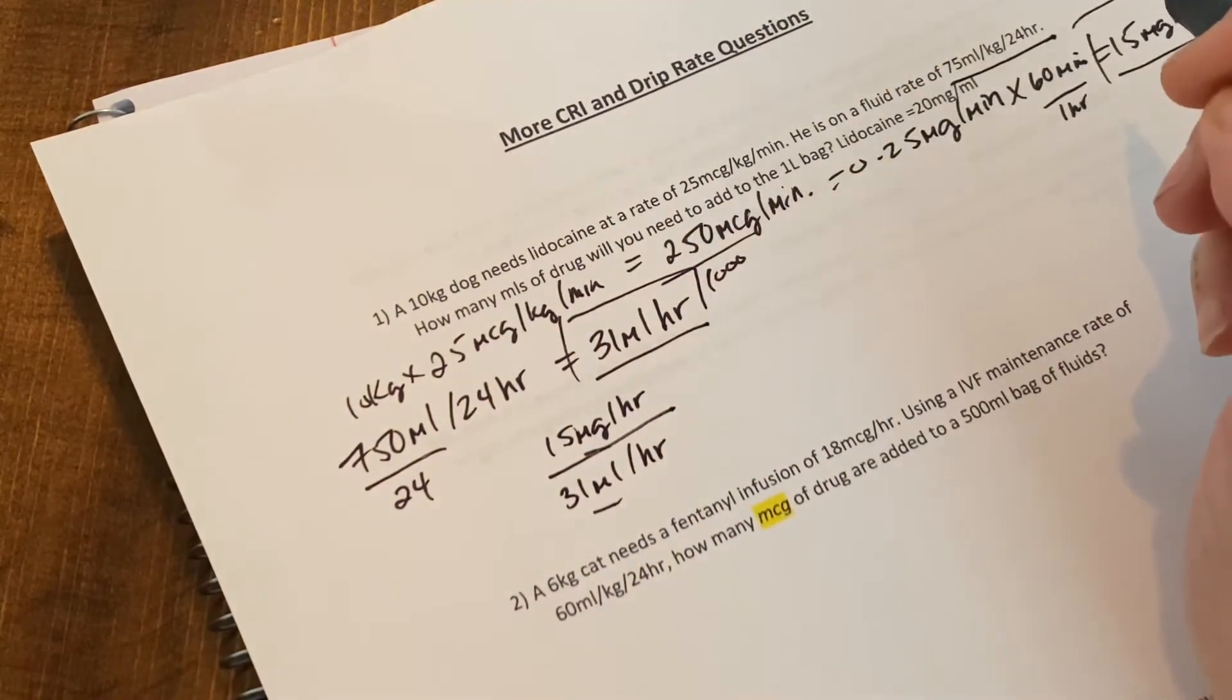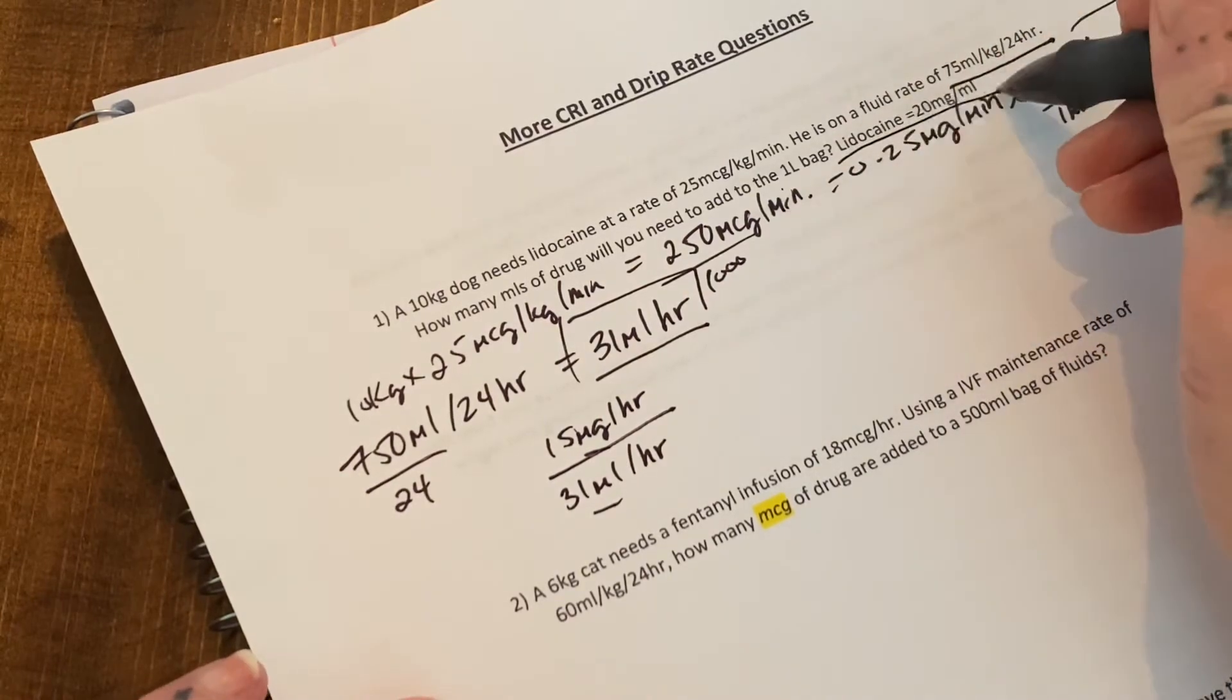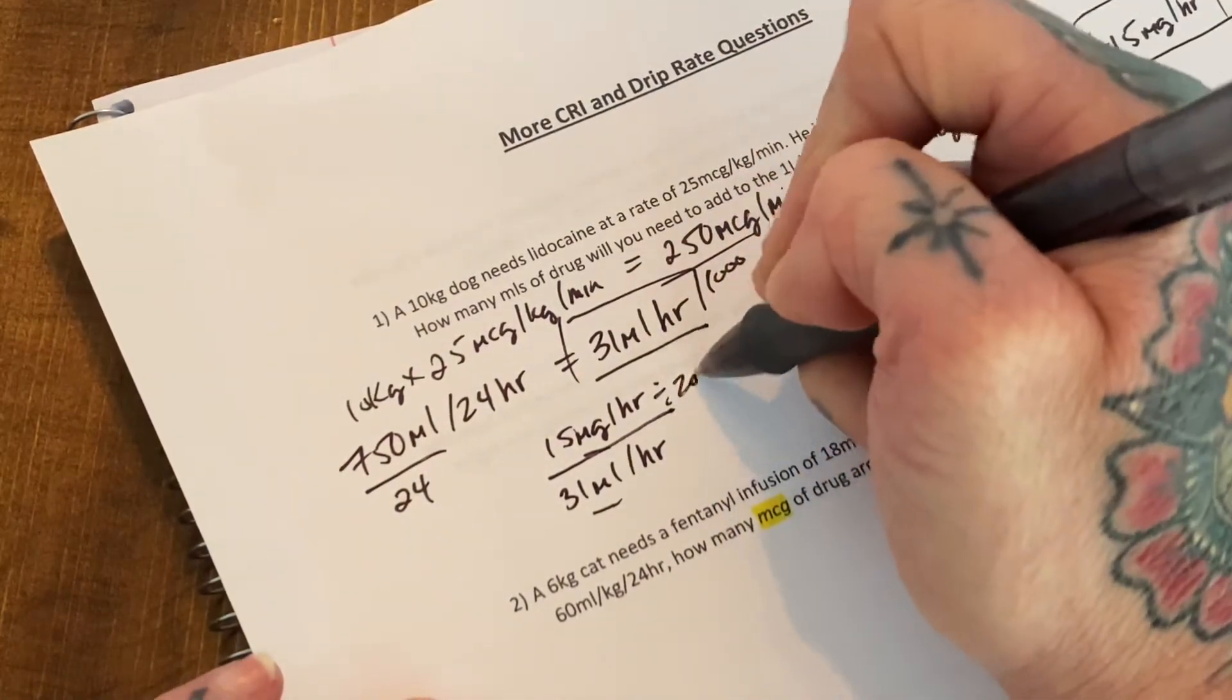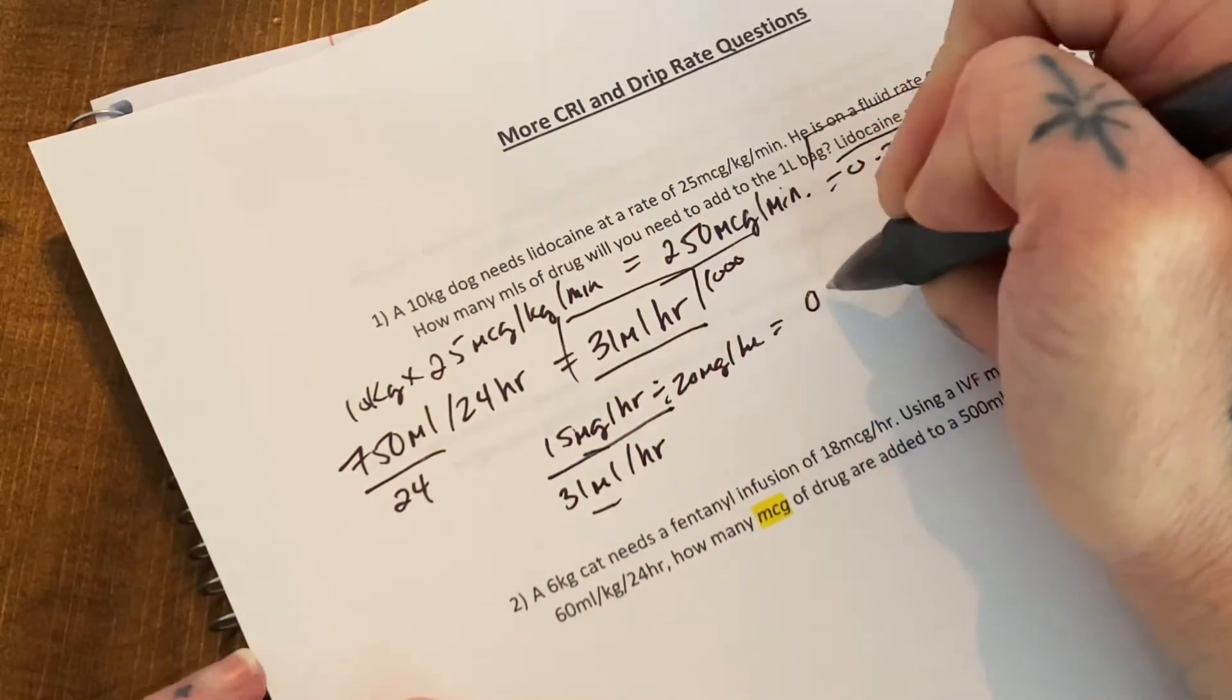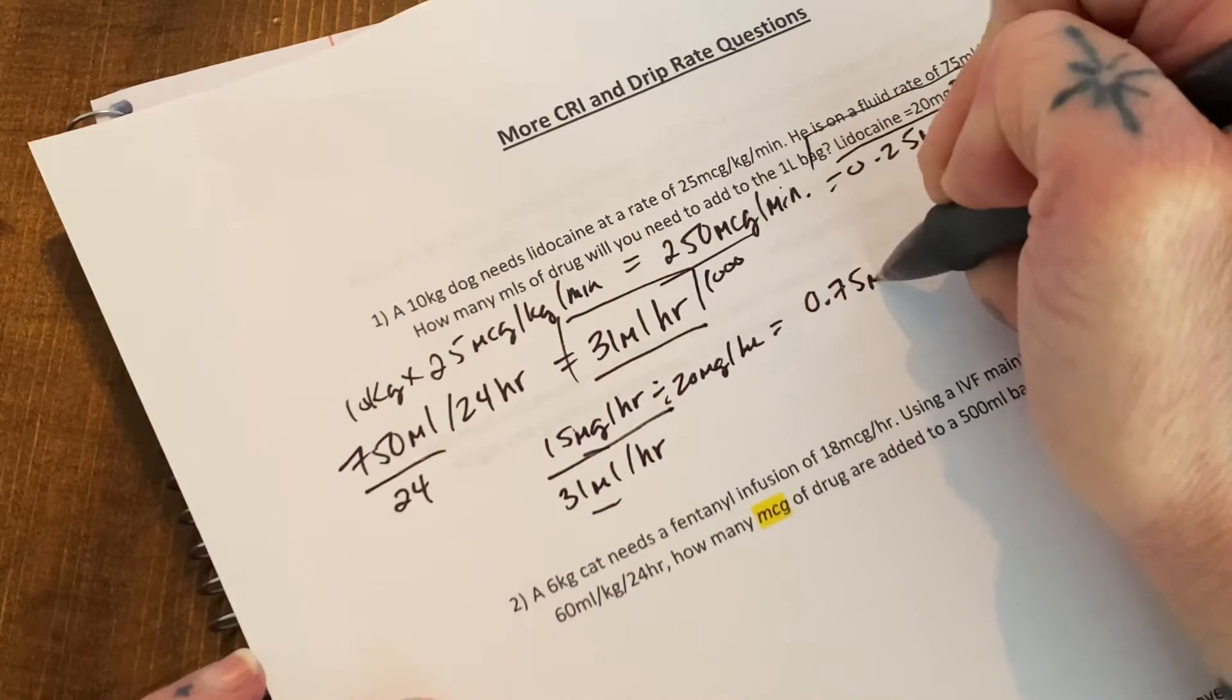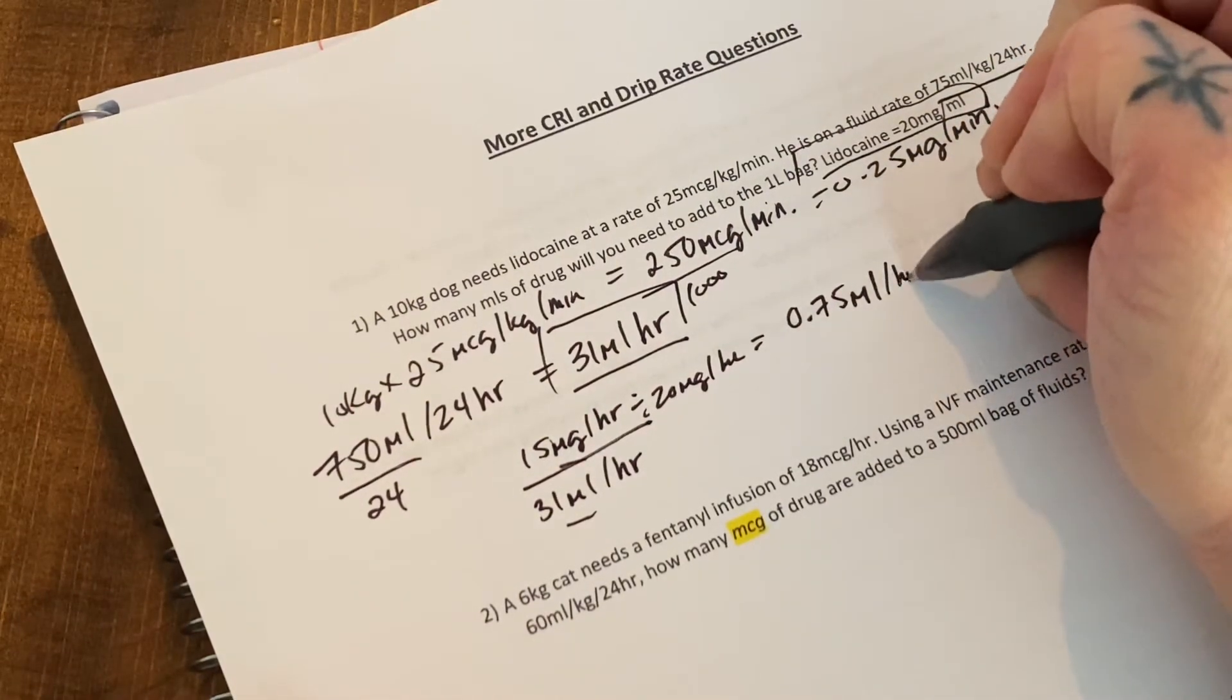So 15 divided by 20, which is the lidocaine right here, so I'll just put it divided by 20 mg per mil equals 0.75 mils an hour. Sorry about that.